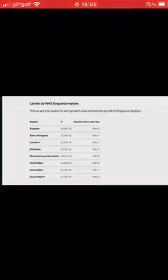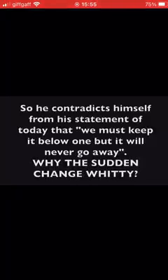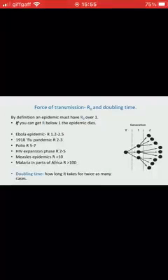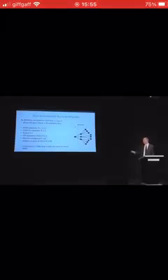Once it's below one, the epidemic is going to die. Understanding this number is central to epidemics. In fact, very large numbers of infectious epidemics have quite low R values — they're quite close to 1. So the idea of getting them below 1 is entirely biologically feasible.